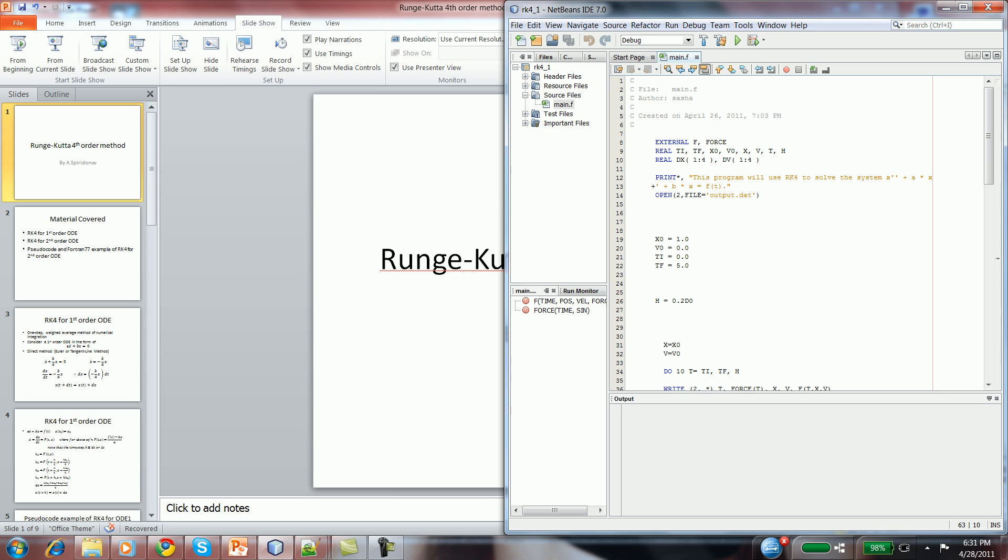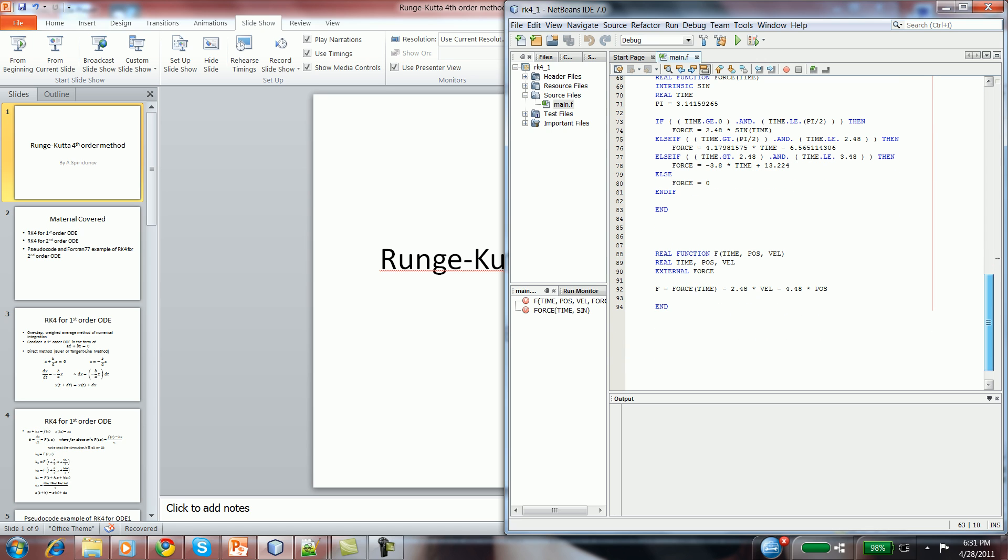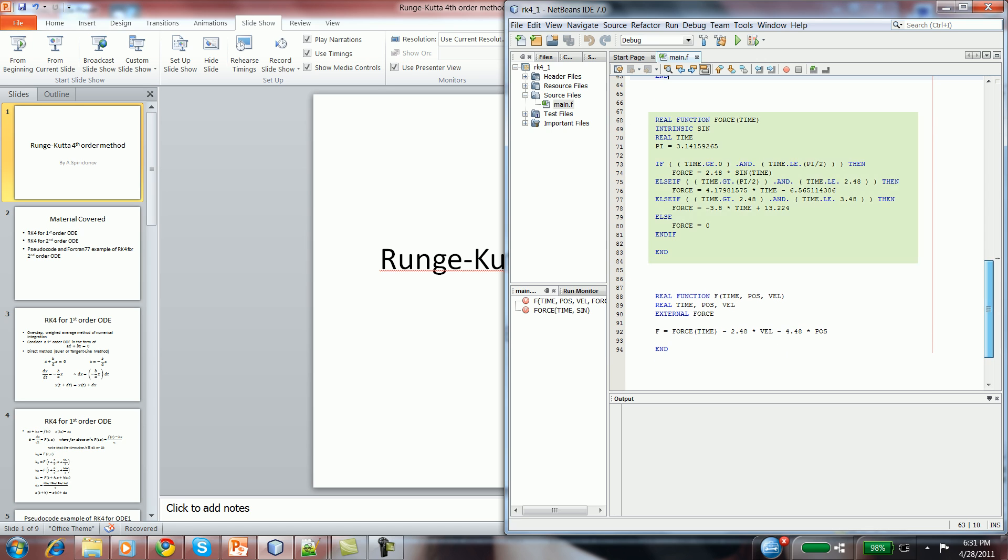Here is an example of the code written in Fortran. Then, as you can see here, I define my force function as a function of time. And between 0 and pi over 2, it's 2.48 times the sine of time. Then, I'm using a bunch of other if statements to differ between the pieces of the function.